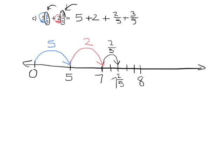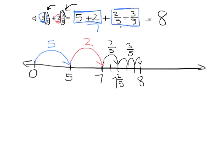Now for this 3-fifths, I'm going to be careful: one-fifth, two-fifths, three-fifths. There — I've added my 3-fifths, and that puts me perfectly at 8. That's my answer. Students can see that 5 plus 2 is 7, and 2-fifths plus 3-fifths is 5-fifths, which equals 1, giving 8. The idea is to use the number line to record our thinking as a developmental step toward the algorithm.